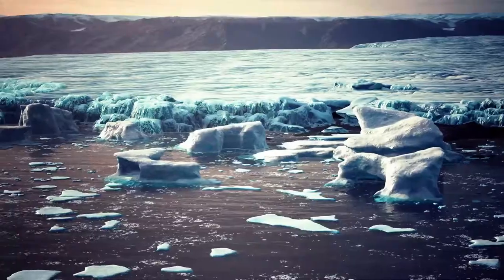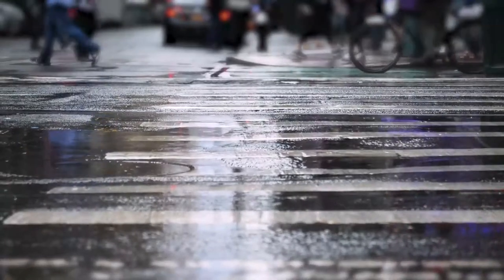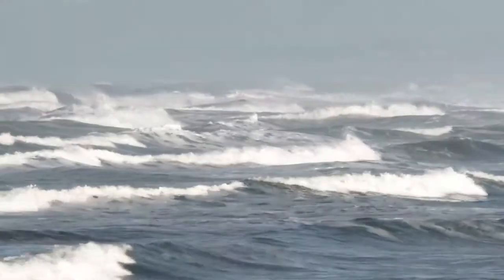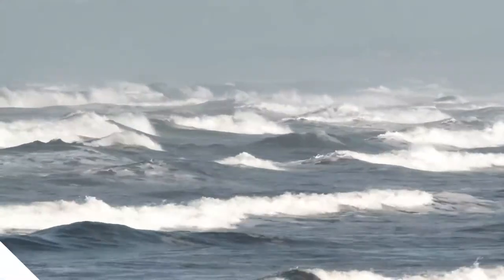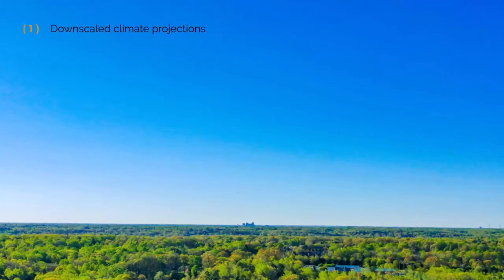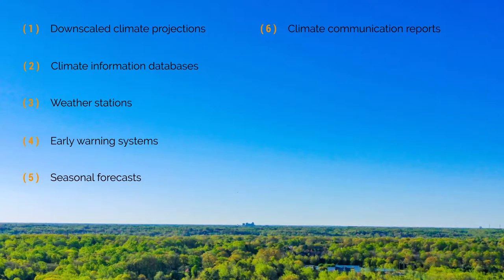Let us understand climate information as our past, current, and future climate conditions. These help us define the different climate scenarios we may face, which in turn allow us to prioritize our adaptation actions. The sources of climate information include downscaled climate projections, climate information databases, weather stations, early warning systems, seasonal forecasts, climate communication reports, climate adaptation plans, and a repository of other climate-related reports.